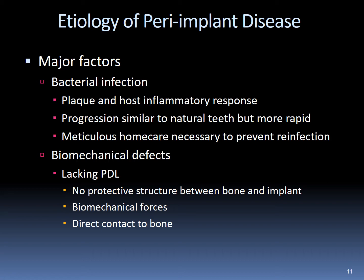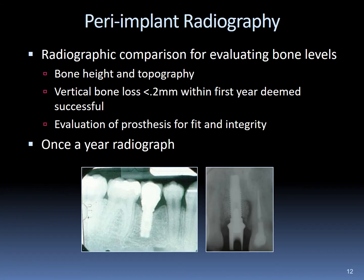Biomechanical defects of implants result from non-existing periodontal ligaments. The lack of protective structure between the bone and the implant alters how biomechanical forces are handled, causing direct contact with the bone environment. Peri-implant radiology is used to compare bone levels. Bone height changes of less than two-tenths of a millimeter in the first year are deemed successful. Prostheses should be evaluated for fit and integrity, and radiographs should be taken every year.